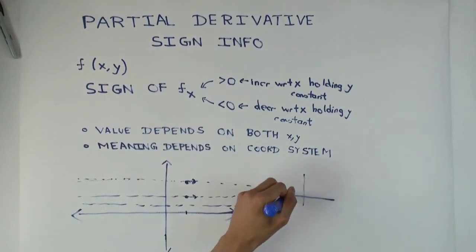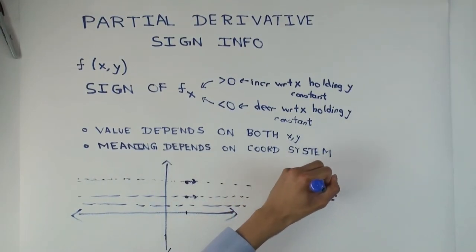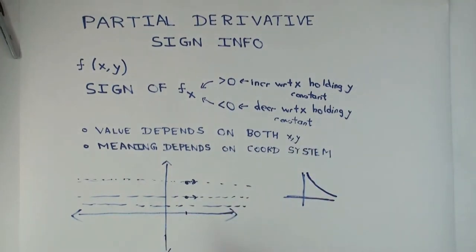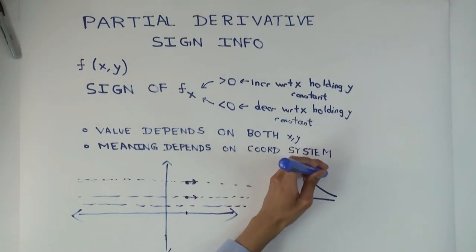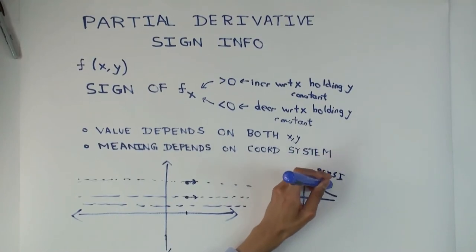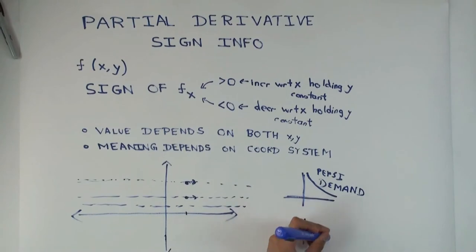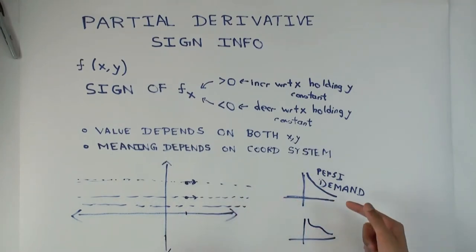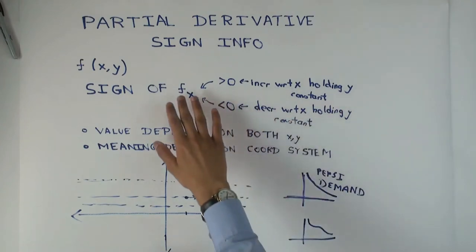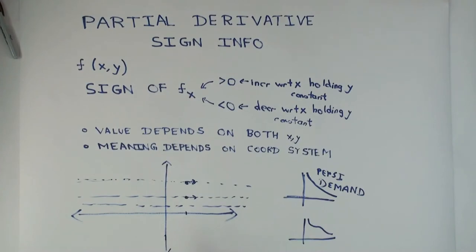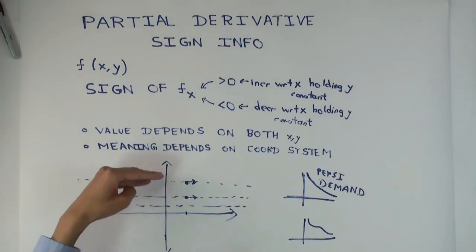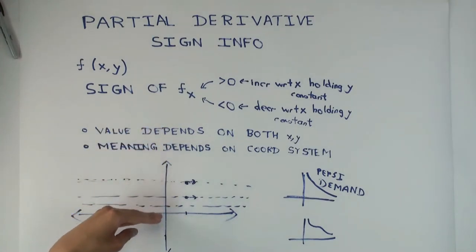If your demand curve for Pepsi looks something like this at a given price of Coca-Cola, and now you change the price of Coca-Cola, you'll get a new demand curve. The law of demand is saying that each of these demand curves will be downward sloping — all of them. There's actually an infinitude of different demand curves for every fixed value of the other variables, and the law of demand says that in each case f sub x is less than zero, meaning each demand curve is downward sloping.